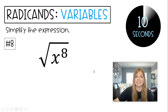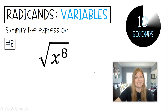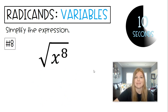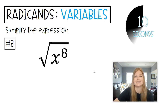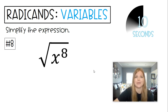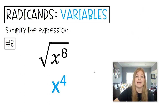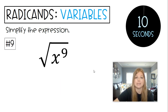Square root of x to the eighth — this is an easy one. The even ones are always so nice. That would simply be x to the fourth. Even to even, no absolute value bars.